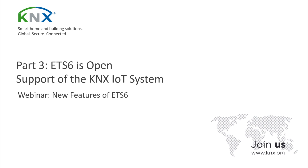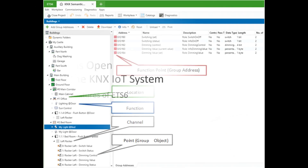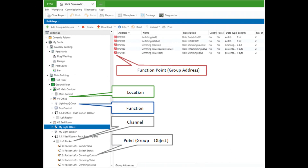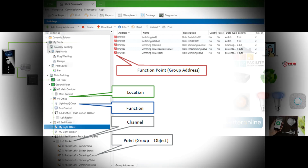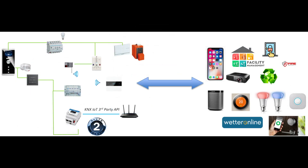KNX IoT represents KNX in the outside world, implementing semantic project information and tagging. ETS 6 implements a graphical user interface in which interface objects mimic their real-world counterparts in appearance and interaction. ETS 6 Professional adds semantic information in the background to locations, functions, function points, channels, group objects, and more. It exports all semantic data to the KNX IoT third-party API, exposing IoT endpoints that can be addressed by third-party clients.